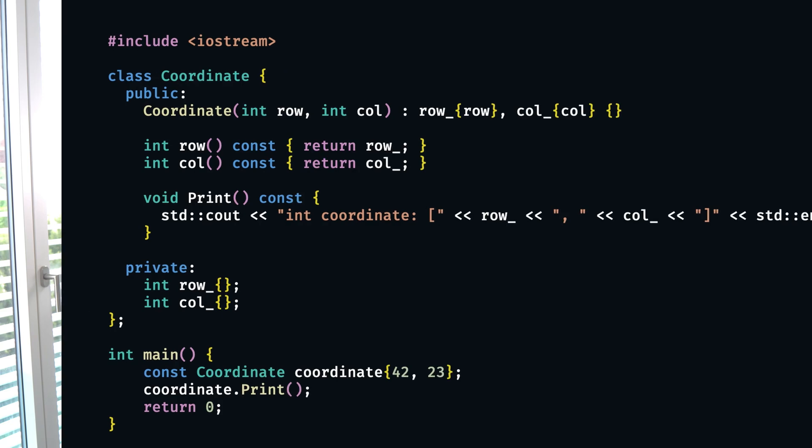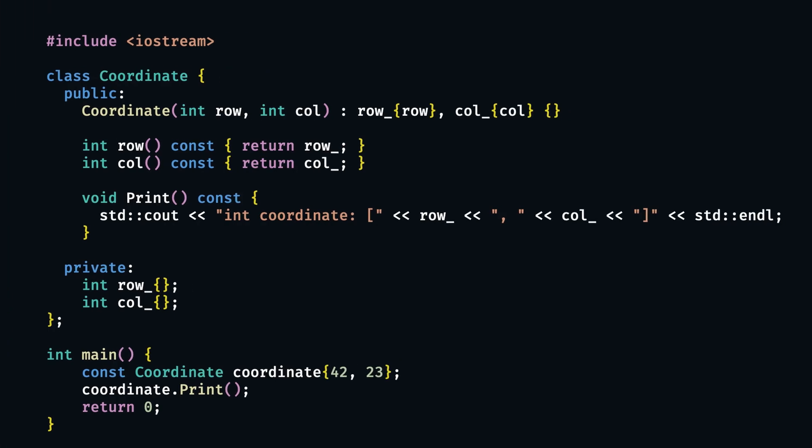Another good news is that we've seen class templates before. A lot of STL containers like std::vector, std::array, or std::map are actually class templates, and that's why we can put values of nearly any but same type into them. So for the sake of example, let's say I want to write a simple class that will represent a coordinate of a pixel on a screen, that has an int row and column and does not much more than just pack them together as well as allow getting or printing their values.